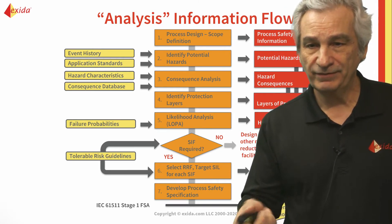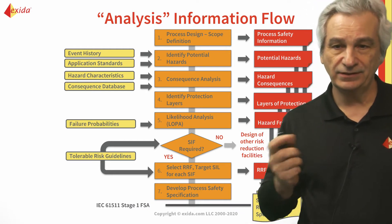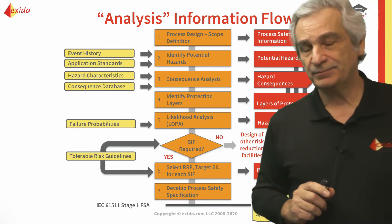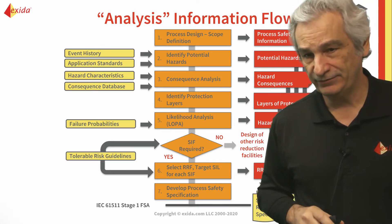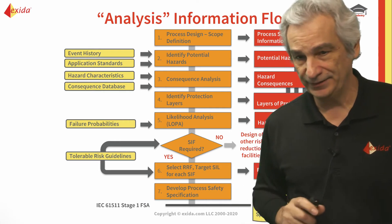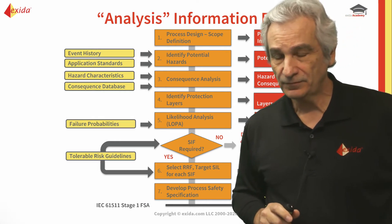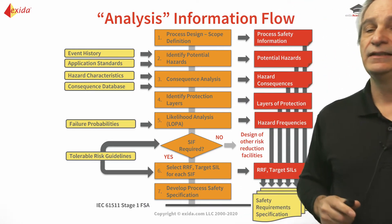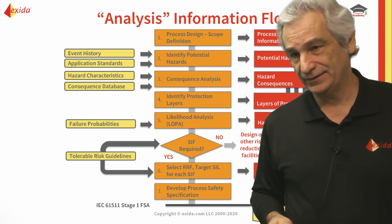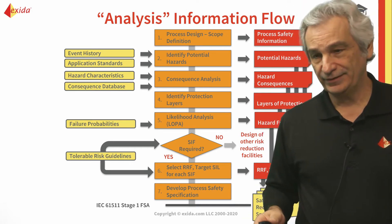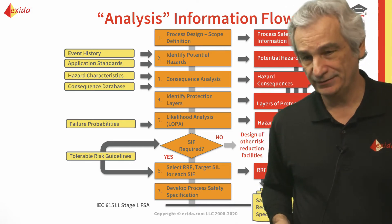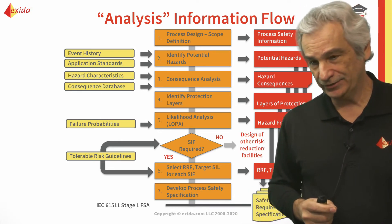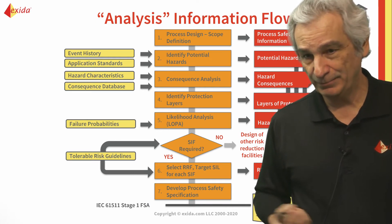Once we've identified consequences, we look at the layers of protection — specifically those that are non-SIF specific. What do we currently have in place? We then do our likelihood analysis, looking at the layer of protection analysis. This is where we need to know failure rates and failure probabilities, to make sure that any device we're relying on for protection is reliable and dependable.